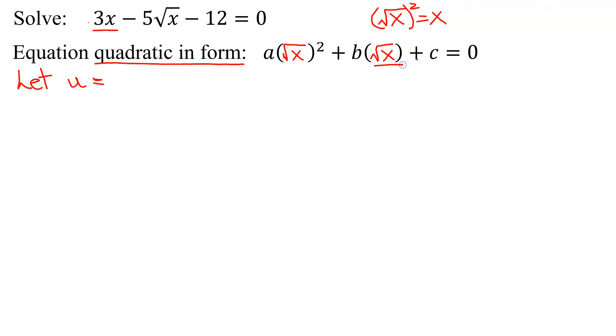So we let u equal the square root of x. Then our equation becomes 3, well, what was x? x is the square root of x all squared, which is u squared. So I get 3u squared minus 5 times, instead of the square root of x, I'm going to have a u, minus 12 equals 0.